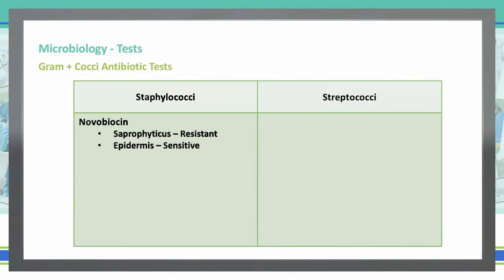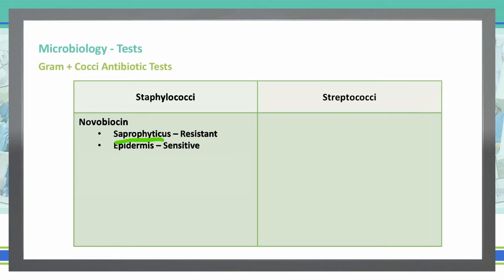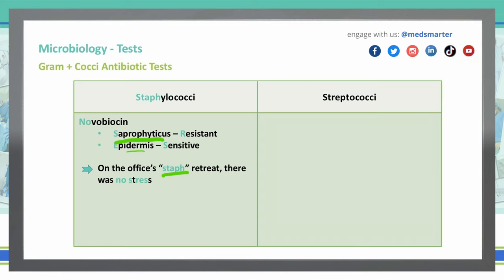With staphylococci, we can do the novobiocin test. If an organism is resistant to novobiocin, then we're dealing with Staph saprophyticus. However, if it is sensitive to novobiocin, then we're dealing with Staphylococcus epidermidis. A way to remember this is the sentence: 'On the office staff's retreat, there was no stress.' Staph for staphylococci, 'no' for novobiocin, S for saprophyticus — saprophyticus is resistant, epidermidis is sensitive.